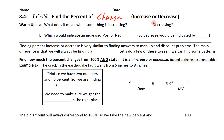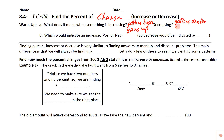First, let's start off with a little vocabulary to make sure we're all aware of what we're talking about. What does it mean when something is increasing? Well, if something is increasing, it's getting bigger — getting bigger, or it's going up. By the same token, decreasing would be the exact opposite: getting smaller, or going down.